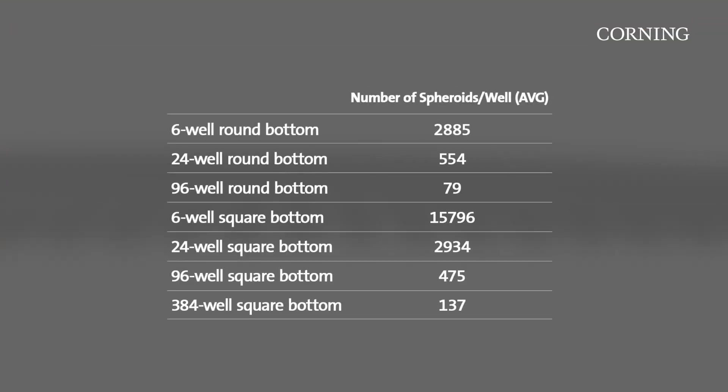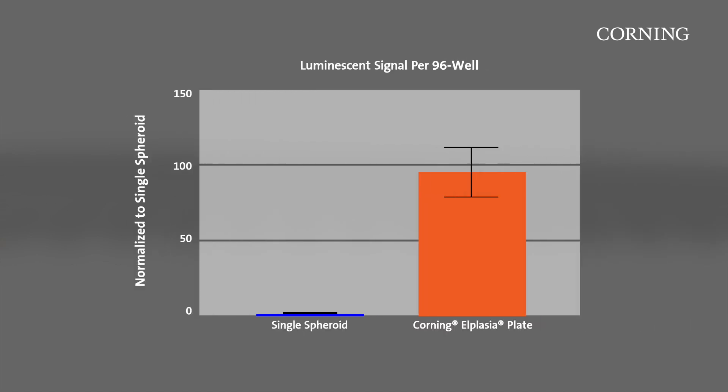Using Elplasia plates, researchers can produce from 79 to 15,000-plus spheroids per well. The high volume of spheroids per well increases the signals per well without increasing spheroid size.